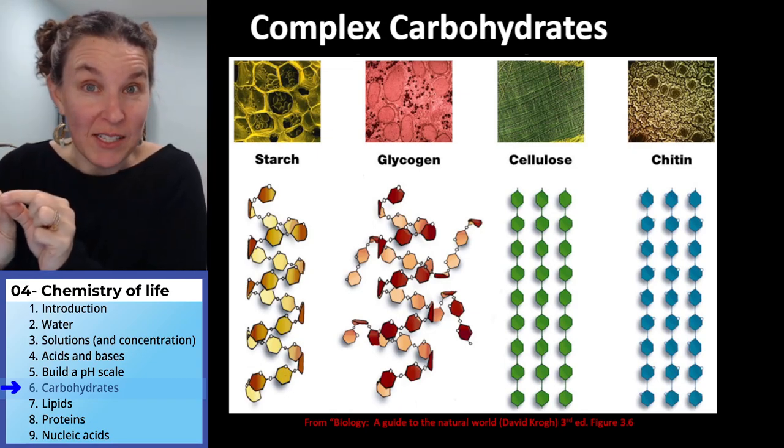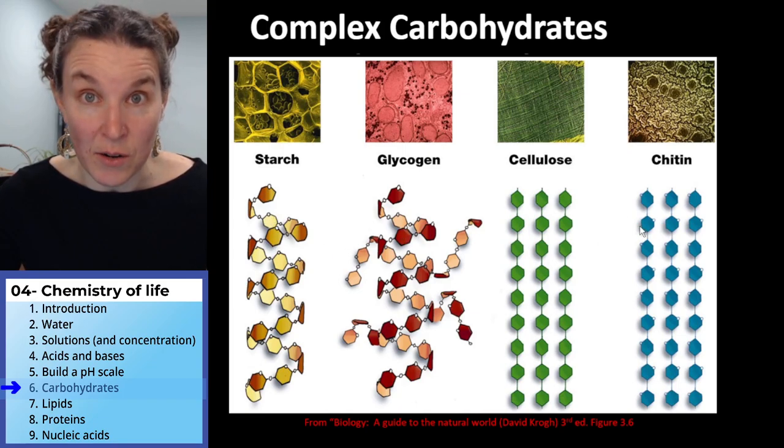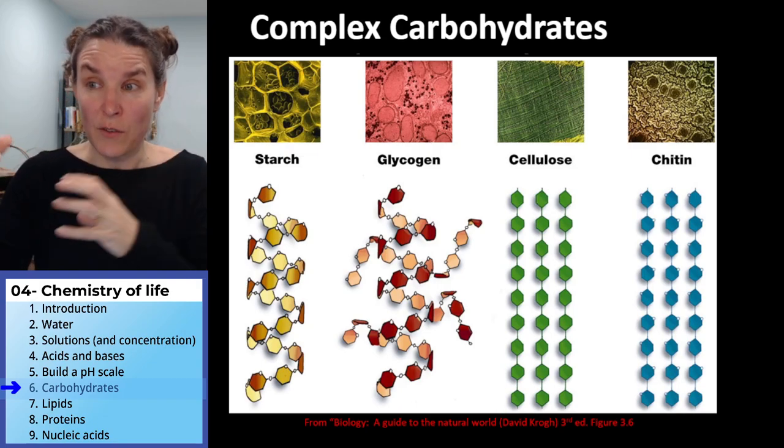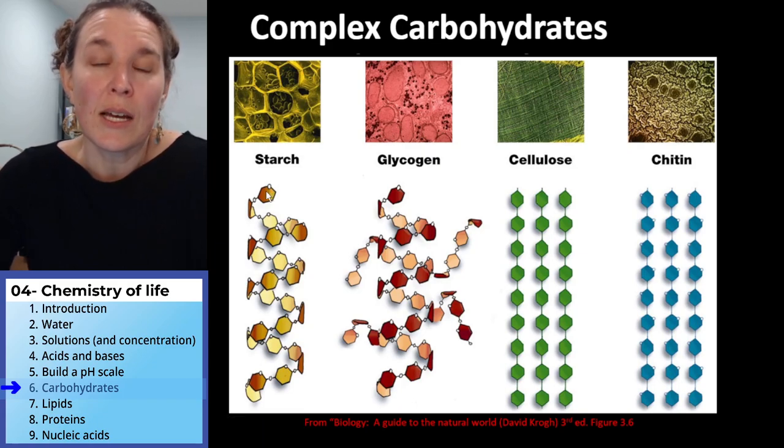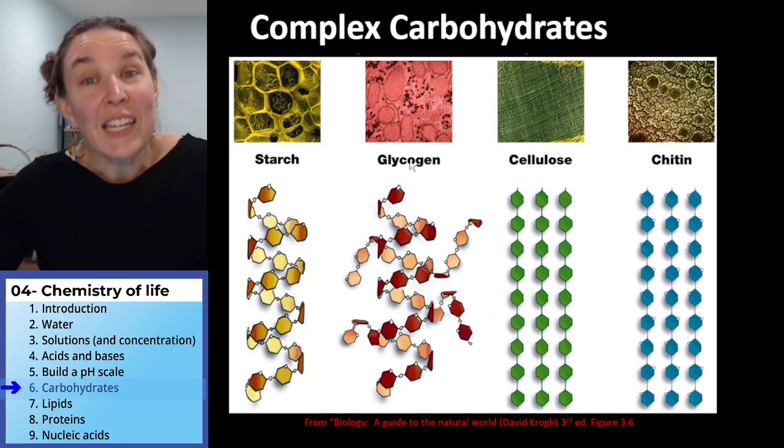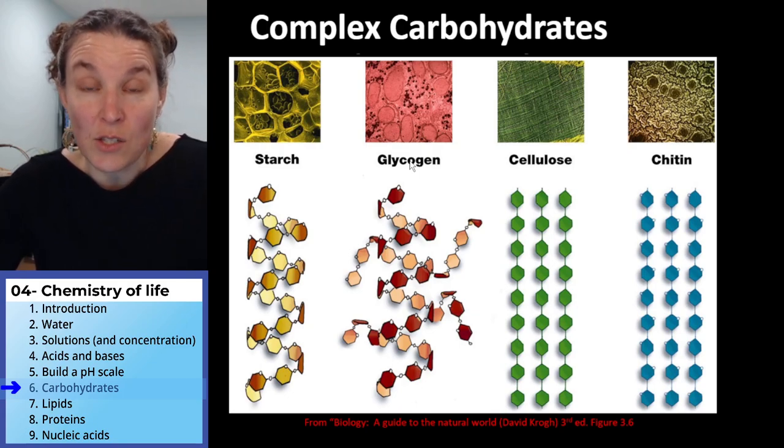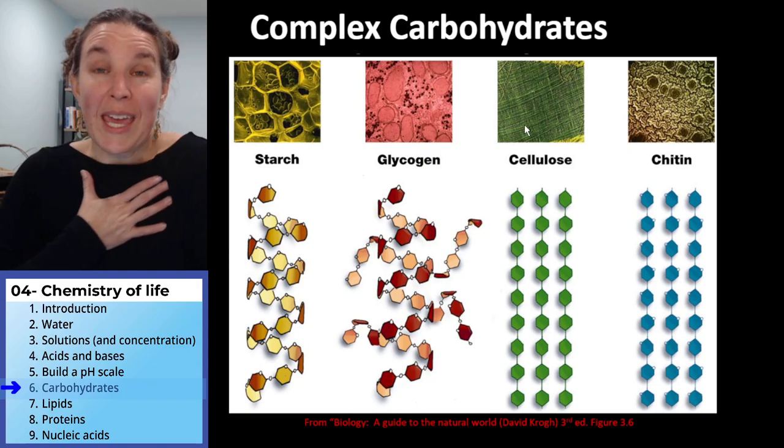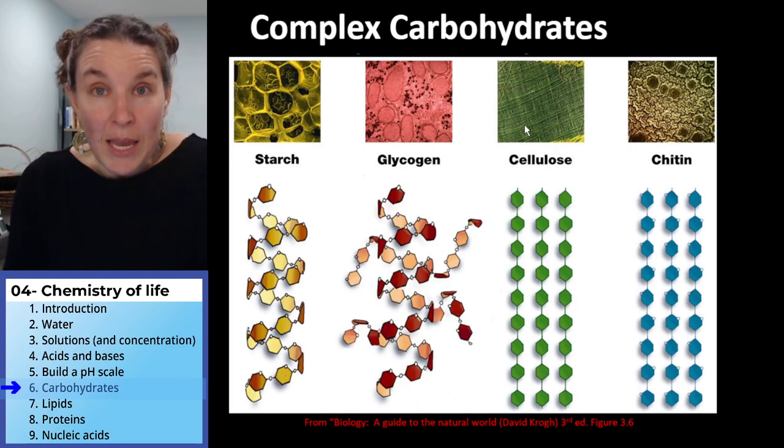These complex carbohydrates are polysaccharides and each one - I don't know if you can see my mouse - each one of these little circles on all of these is a monosaccharide. So you can see how we've put together all these monosaccharides in these strings to make different complex carbohydrates. We have starch - starch is a complex carbohydrate that you find in potatoes and other delicious items. Glycogen is a complex carbohydrate that you find in your liver. It's the way that your body stores glucose for energy. Cellulose is a complex carbohydrate.